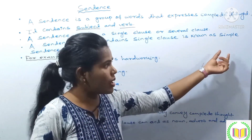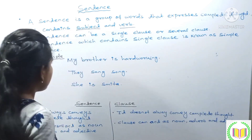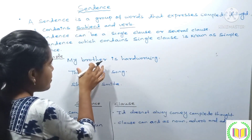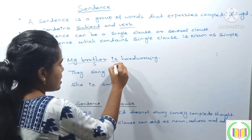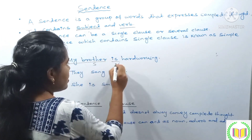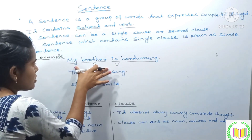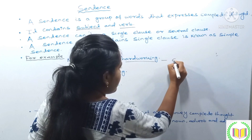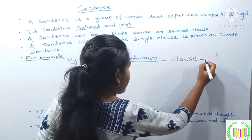For example: 'My brother is hard-working.' This has a subject-verb combination. 'My brother' is the subject. This is an independent clause and also a complete sentence.